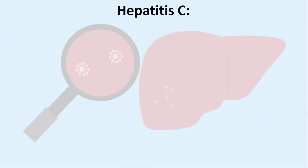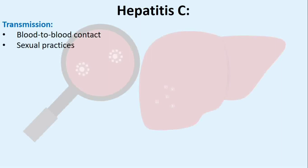Hepatitis C Transmission: Hepatitis C is mainly spread through blood-to-blood contact. In rare cases it can be transmitted through certain sexual practices and during childbirth.